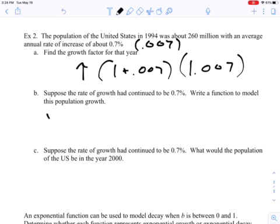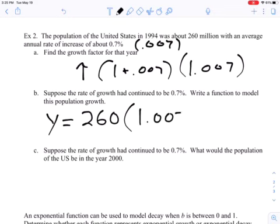Suppose the growth rate had continued to be 0.7%. Write a function to model this population growth. Well, we'd have y equals our initial amount of 260 million. I'm not going to write all those zeros; we're going to know we're dealing in hundreds of millions. Our growth rate is 1.007, and then we have t here, function of time.